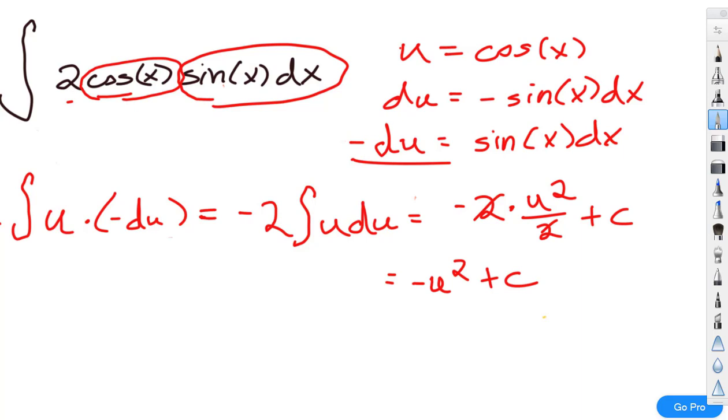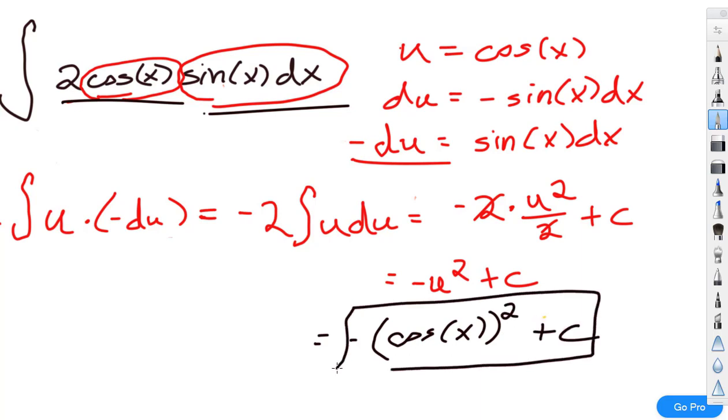Now, just like last time, our question was in terms of x, so we want our solution to be in terms of x. So that is going to be negative, and let's see, what did I let u equal? I let it equal cosine. Negative cosine of x squared plus c. Great.